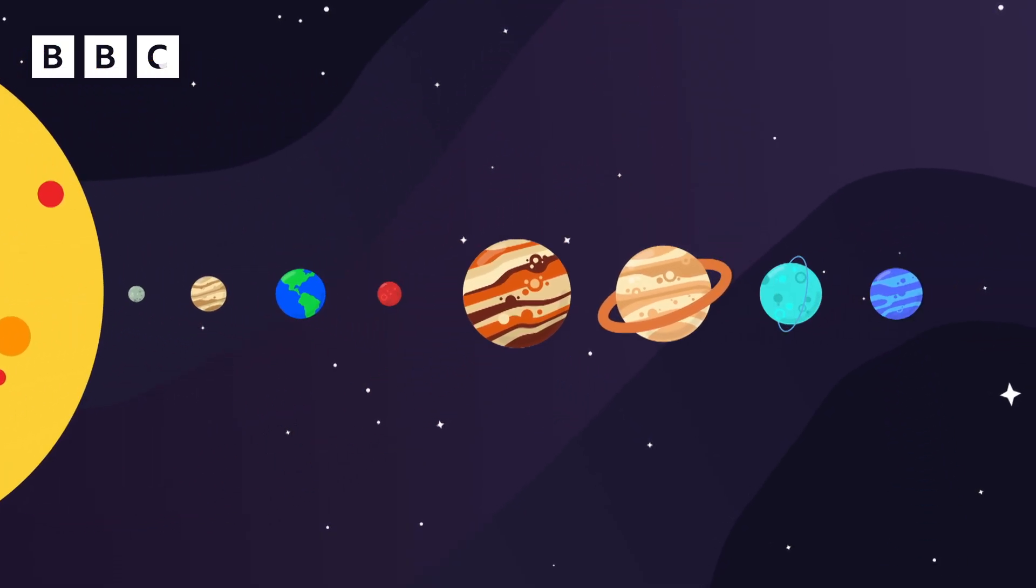All of the planets, starting from nearest the sun, is Mercury, Venus, Earth, Mars, Jupiter, Saturn, Uranus and Neptune.